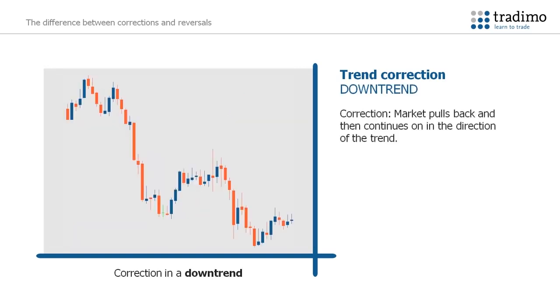Here is a correction in a downtrend. You see the market moves down, then pulls back a little, and resumes moving down again.